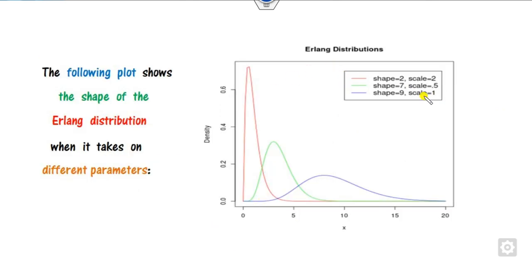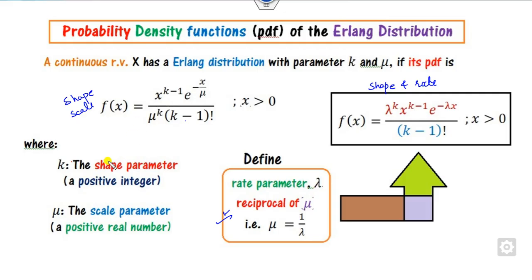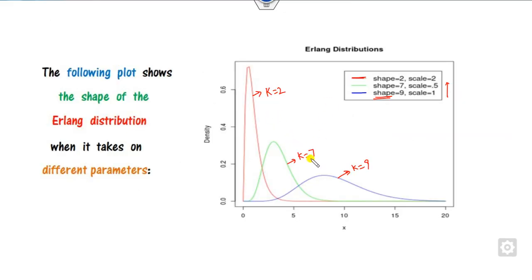You can see the graph lines for different parameter values. Whenever you increase the value of the scale from 1 to 0.5 to 2, you can observe how the graph changes. On the other hand, when the shape values are K=2, K=7, and K=9, you can see that as you increase the value of K, the peak point decreases while the spread changes based on the scale.